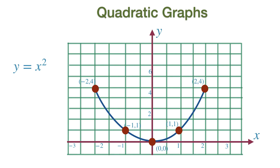In case you haven't noticed, the rule connecting X and Y coordinates is Y equal to X squared in this case, which means if you square the X coordinate, you are getting the Y coordinate.